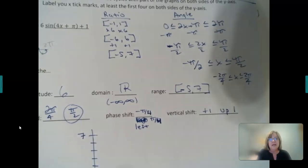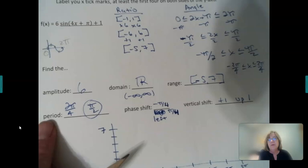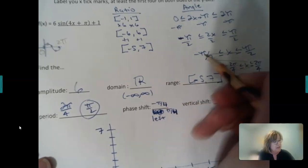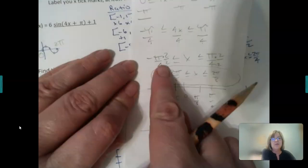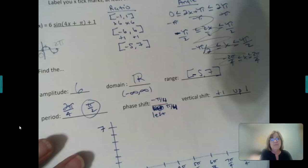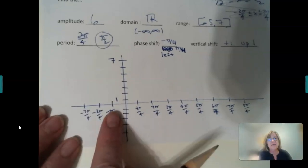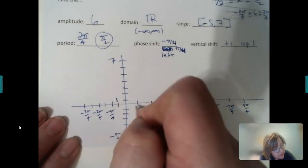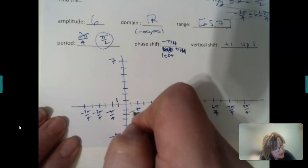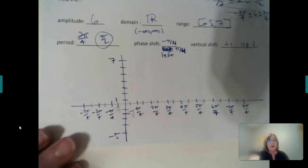Now I already answered my other questions here, so amplitude, absolute value, still 6, domain is all reals, range is negative 5 to 7. Period is 2 pi divided by the coefficient of x, which is 4. Phase shift is what you get after you do the shift here, so it's that negative pi over 4 before I got a common denominator. And then it goes up 1. The units I have here are not good enough. So I'm going to cut all of these in half, and so my new unit is negative pi over 8, and then here's pi over 8, it's pi over 8, 2 pi over 8, 3 pi over 8, 4 pi over 8, so forth.